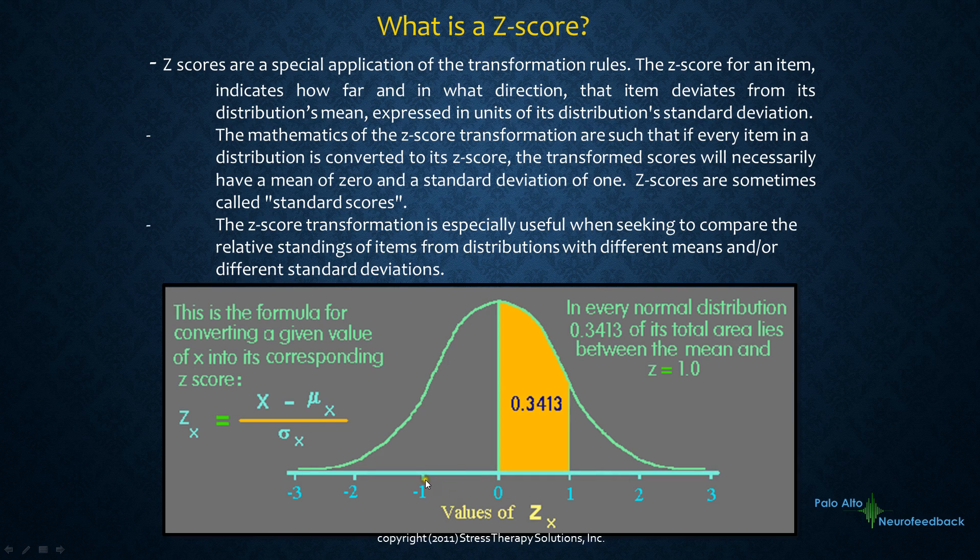Generally, the population, you'll find 68 percent of the population will have measurements from negative one to one standard deviations, and then about 97 to 98 percent of the population will be included from minus two to positive two.